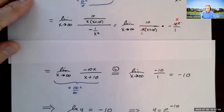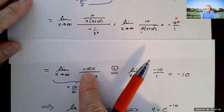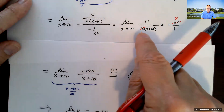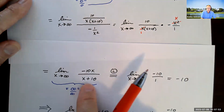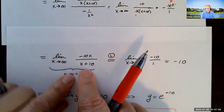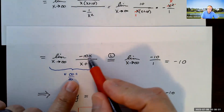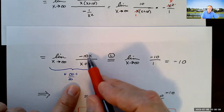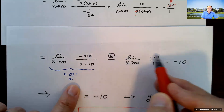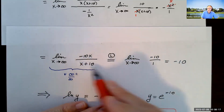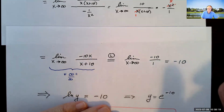So we now have the limit as x approaches infinity of negative 10x divided by (x+10). The top goes to negative infinity and the bottom goes to infinity — infinity over infinity form again, so we apply L'Hôpital's rule once more. The derivative of negative 10x is negative 10, and the derivative of x+10 is 1. The limit is negative 10.